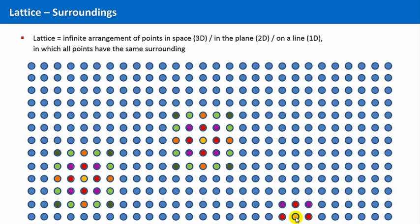Of course, in reality, crystals have borders, and this leads to different physical or chemical properties at the surface compared to the bulk phase.